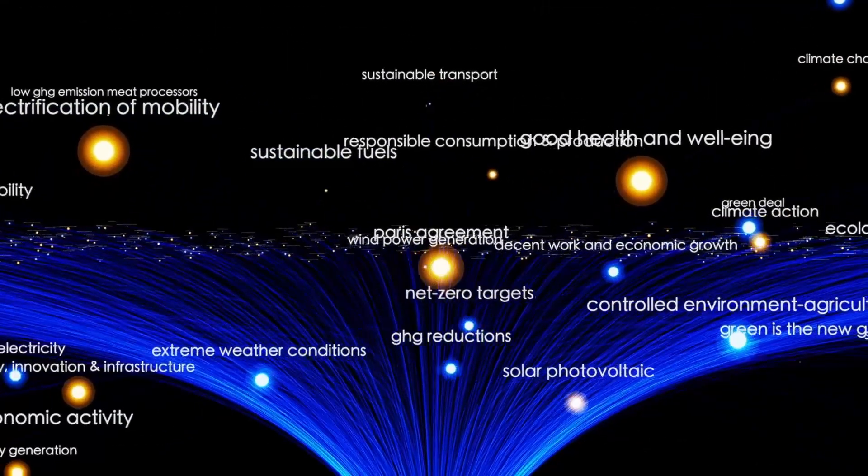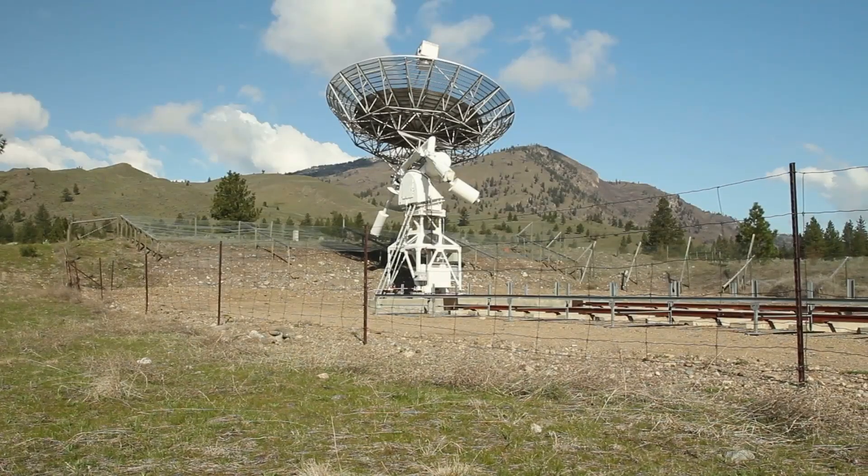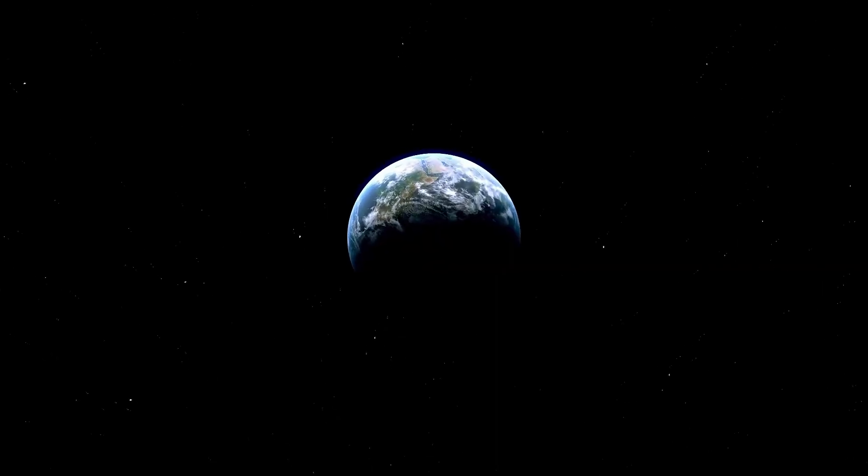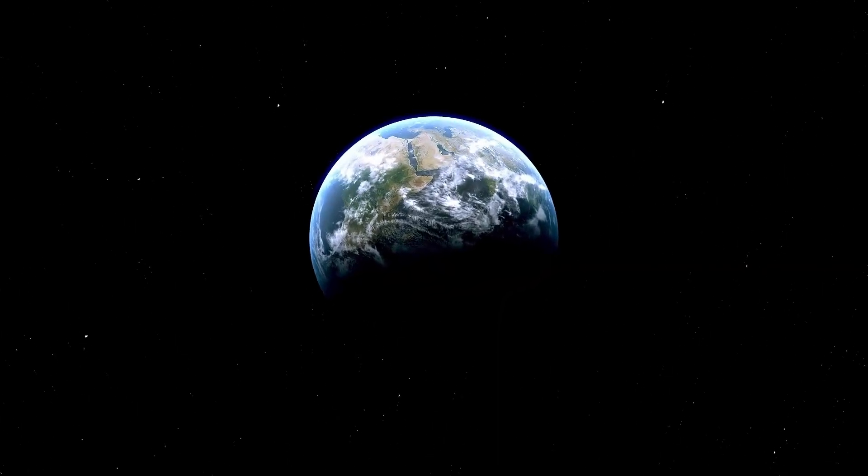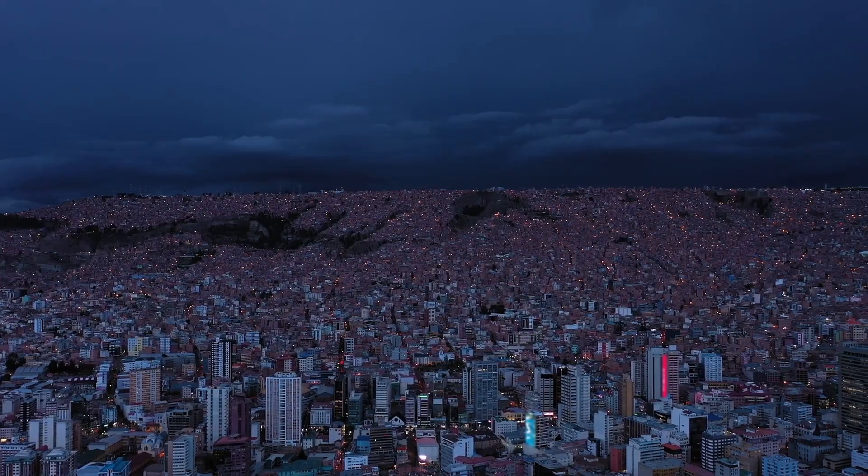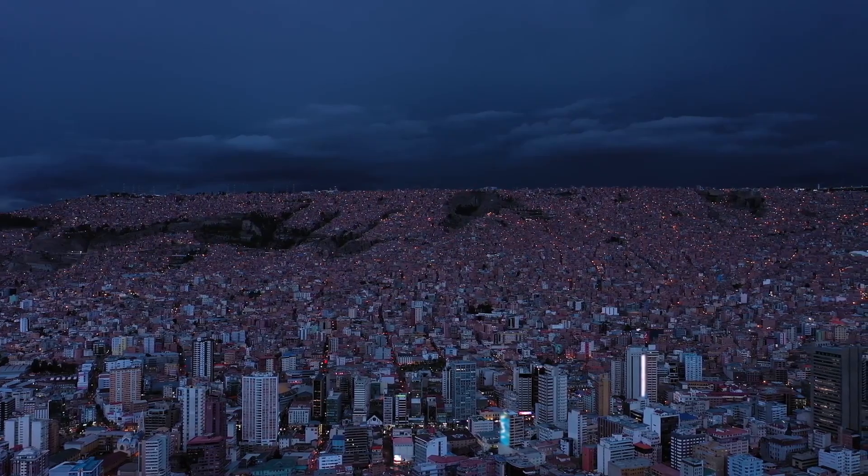As we move beyond our own solar system, we enter the domain of exoplanets—worlds circling stars other than the sun. With an estimated 200 billion stars scattered throughout the universe, the chances of discovering new exoplanets are virtually limitless. Some even drift through space alone, untethered to any star, like cosmic nomads.